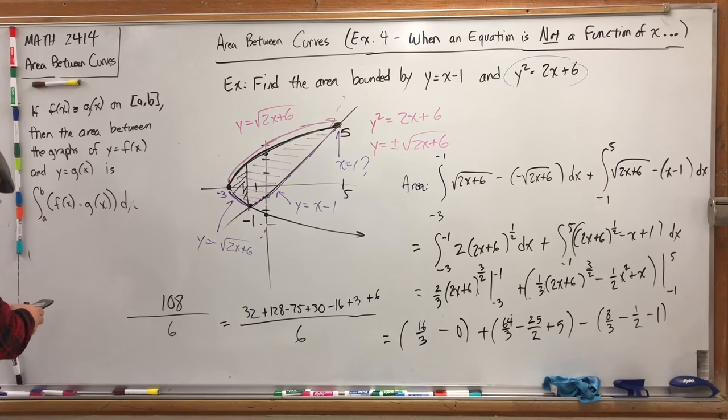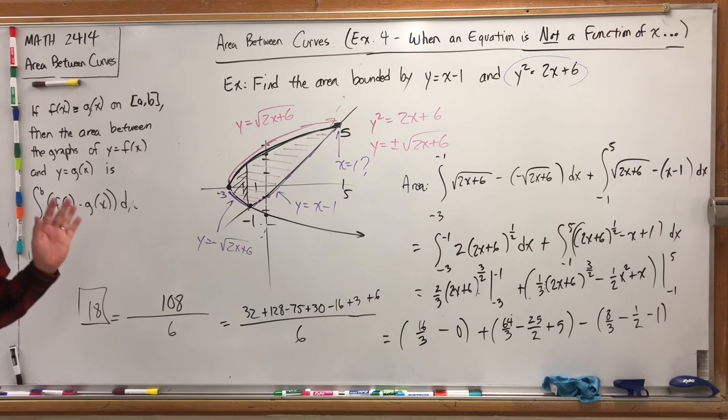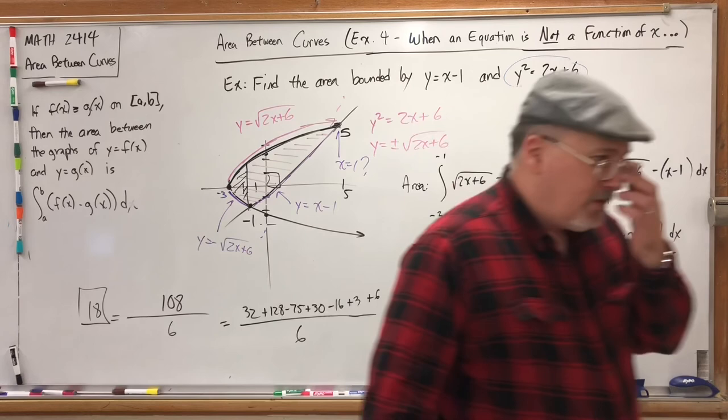So the area of that laminate is 18 square units. Meaning if we took a 1 by 1 square, we could fit 18 of them in there. Oh, that was a lengthy problem. Man, I wish there was an easier way to do it. Why do you think I put the 3 dots there?